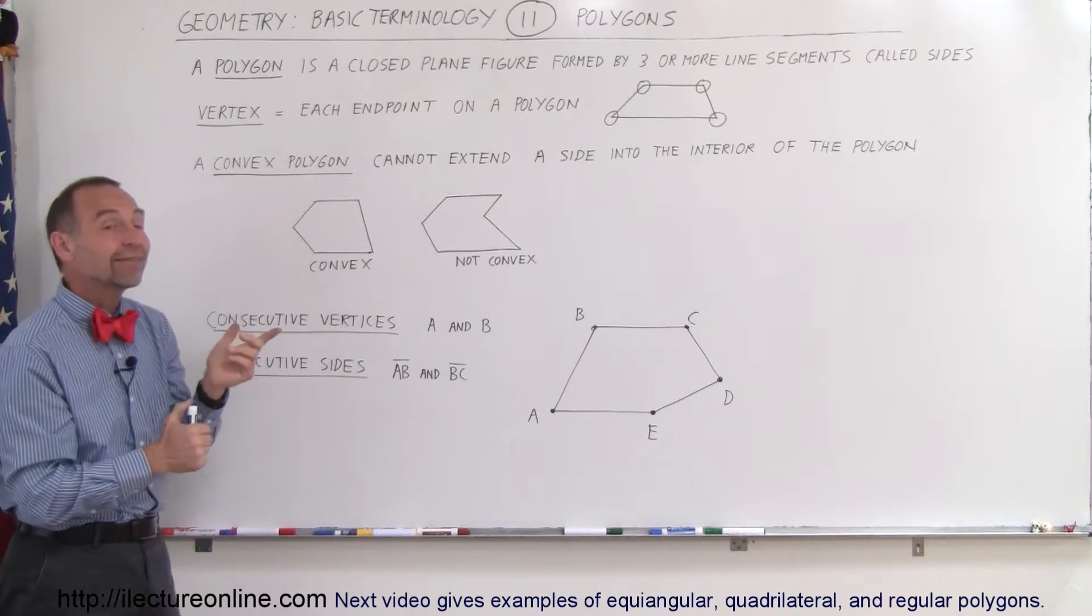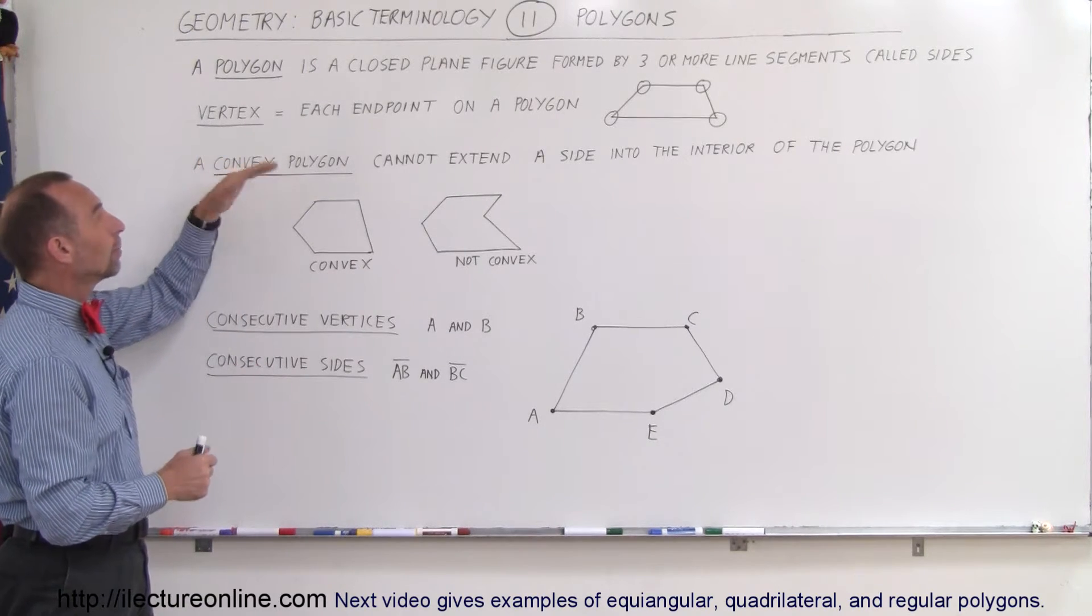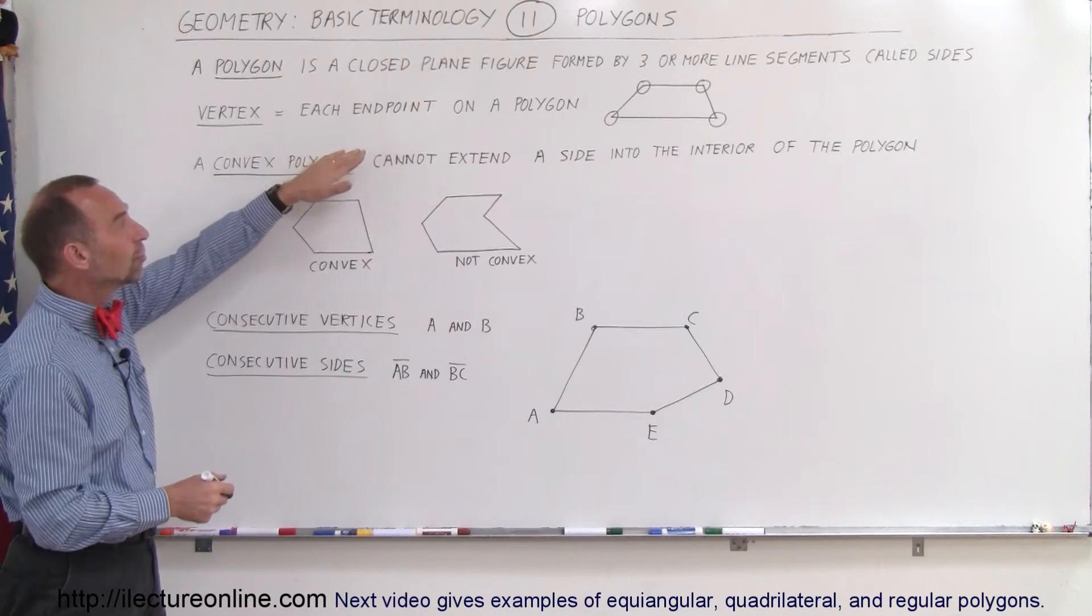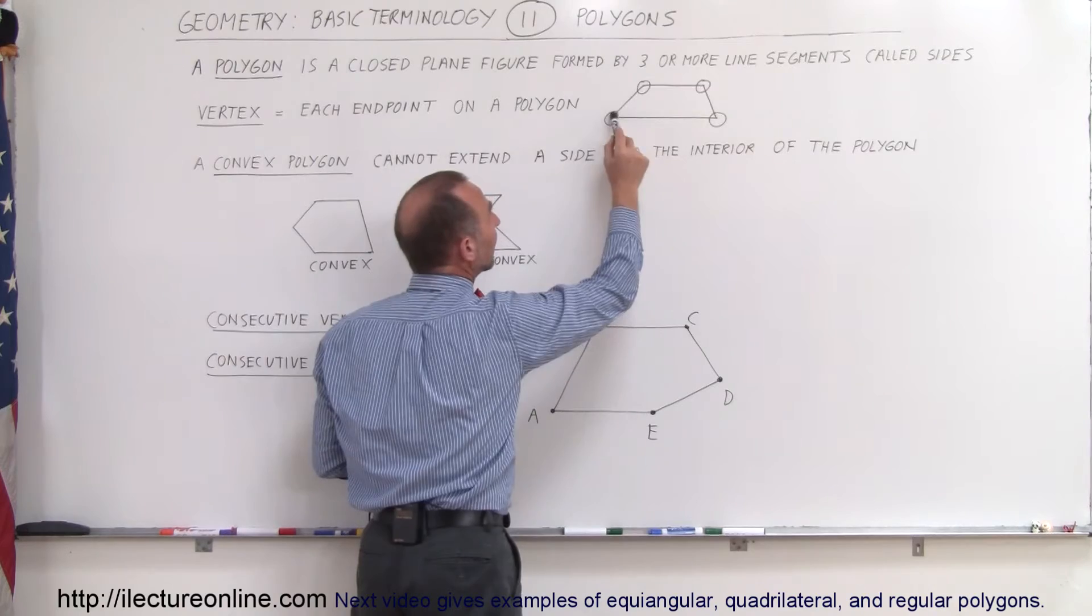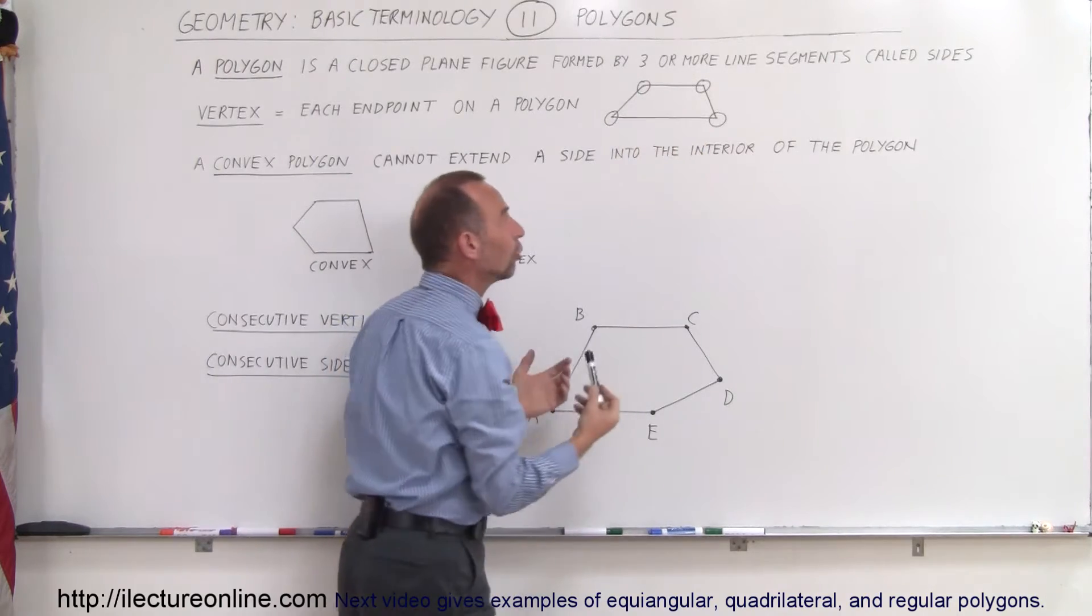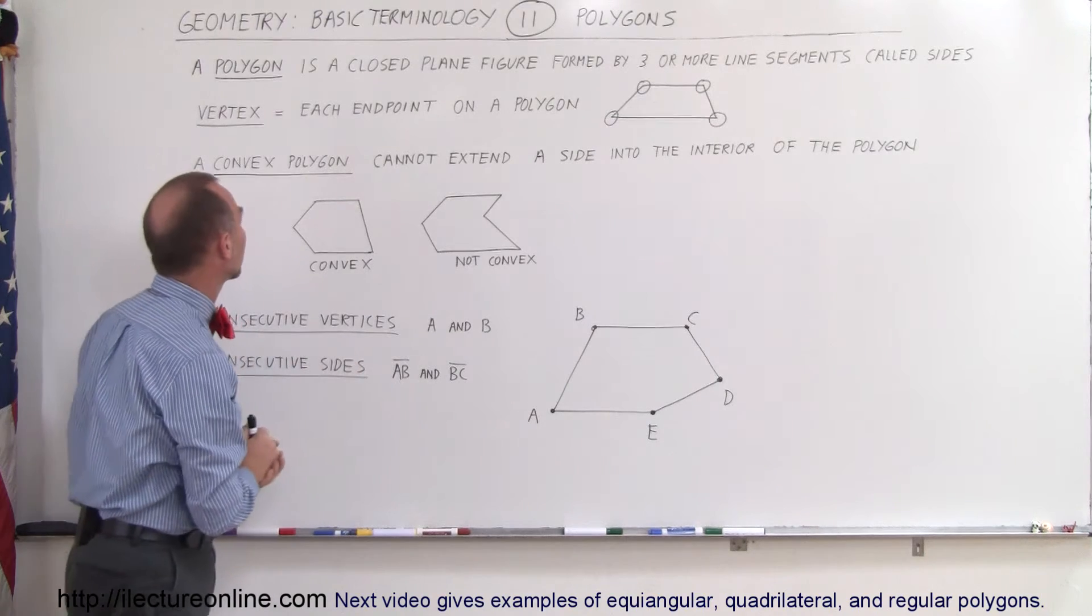The line segments are therefore called sides. The vertex on the polygon is each of the endpoints on the polygon. In other words, here's a polygon with four sides made of four line segments, and each corner, so to speak, is called a vertex. So a vertex is named for each corner of the polygon.